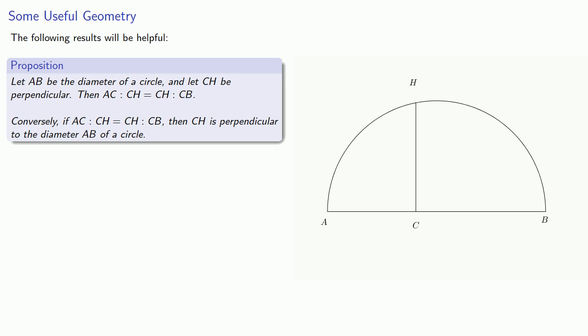We'll prove the converse algebraically. Let AB equal q, the diameter, AC equals x and CH equals y. And note that this means CB is q minus x.